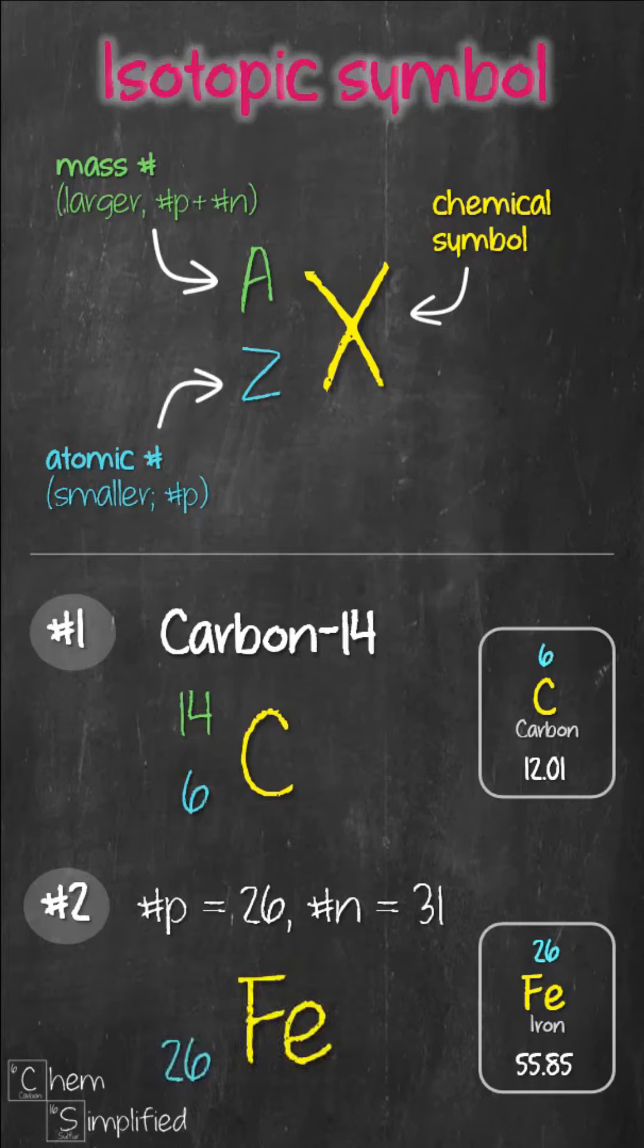Atomic number is 26 and the mass number is the sum of proton and neutron 26 plus 31 and that gives us 57. This is the isotopic symbol for an element with 26 protons and 31 neutrons.